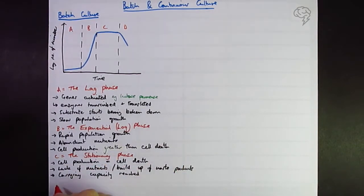And last up, D is for the death phase. So here nutrients are running out or waste products are too much and death rate is increased.